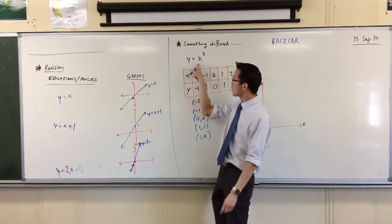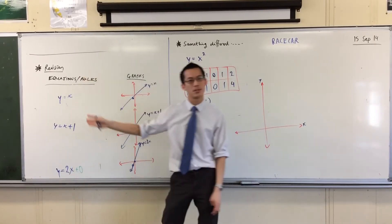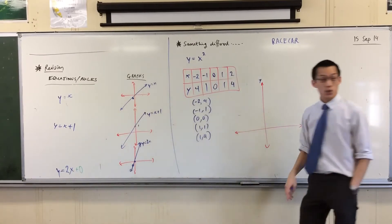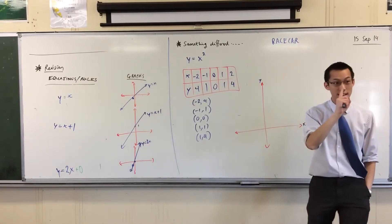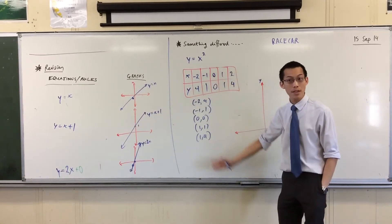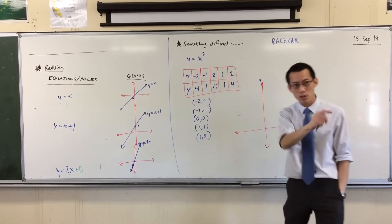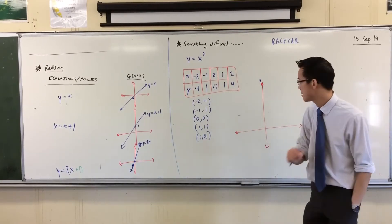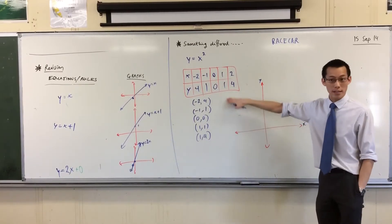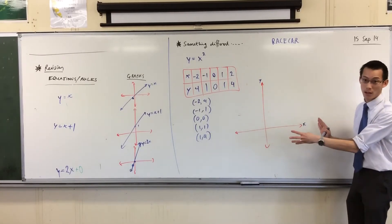So y equals x squared is like one of these — it's an equation, it's a rule. Which points are we looking for? They're looking for all of them together. I'll show you what I mean. These five points — I'm going to plot all of them on here.